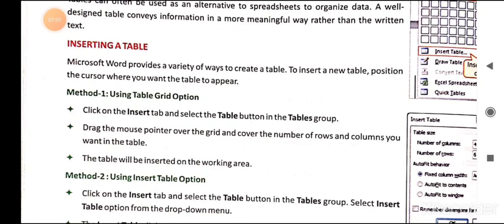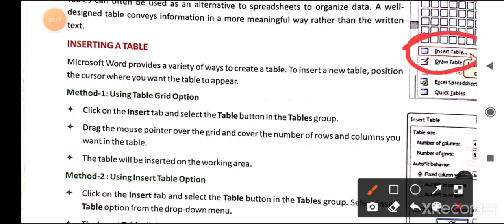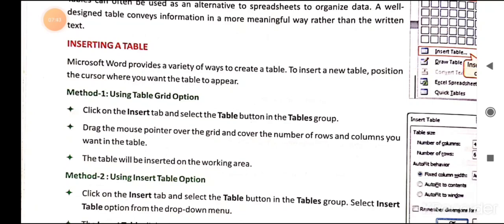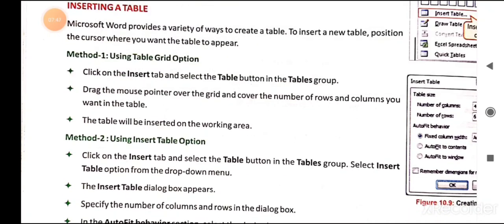The second method is using the Insert Table option. Click on the Insert tab, then click on the Table button in the Tables group. In the drop-down list, after the table grid, you will see the Insert Table option. Select it, and the Insert Table dialogue box appears.